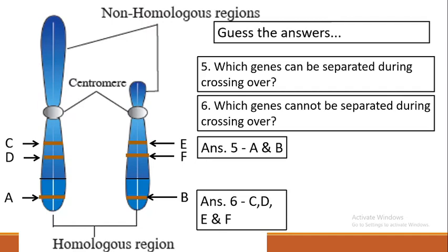Which genes cannot be separated during crossing over? Crossing over happens only in the homologous region, so in the non-homologous region crossing over does not occur. Therefore genes C, D, E, and F will not be separated. So some genes get separated and some do not. Genes that do not get separated are called linked genes, and genes that do get separated are called non-linked genes.